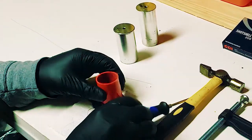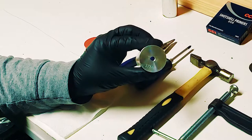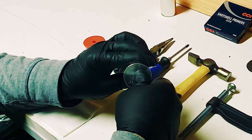The metal hulls will be easier to punch out the used primer than the plastic hulls. Starting with one of the metal hulls, take a 209 primer and insert it into the bottom of the hull base.